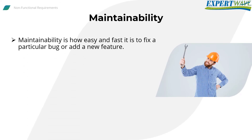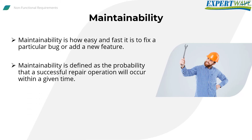Maintainability is how easy and fast it is to fix a particular bug or add a new feature. We don't need to bring the whole software down and rewrite components to fix a bug — it should be easy. Maintainability is also defined as the probability that a successful repair operation will occur within a given time. For example, a component with 90% maintainability for one hour means there is a 90% chance it will be repaired within that hour.